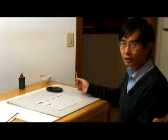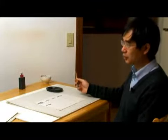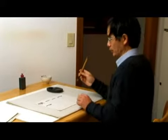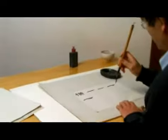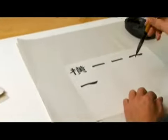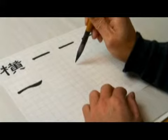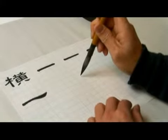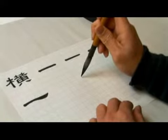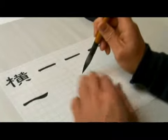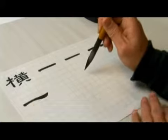So now we got a sample of 横 or the horizontal stroke. And of course the most typical 横 is the character 一, the number one. So it's just like that stroke is one.